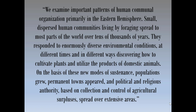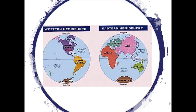What do they mean by the Eastern Hemisphere? There are two hemispheres. The Eastern Hemisphere refers mostly to Europe, Asia, Africa, and also Australia. The Western Hemisphere, of course, is North and South America. That's what they mean by Eastern and Western Hemisphere.